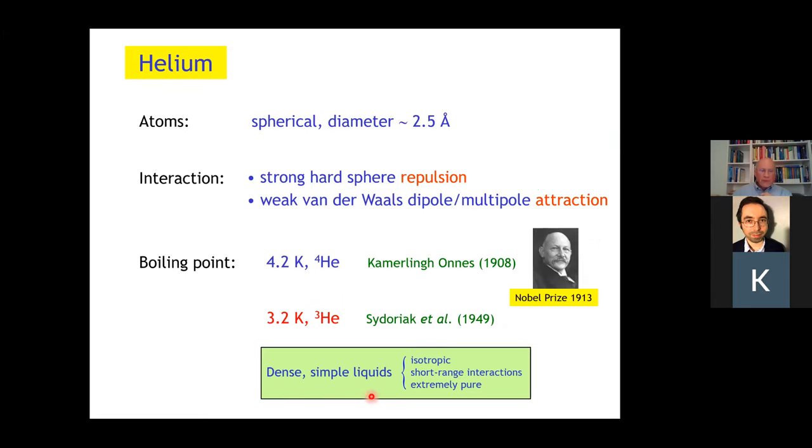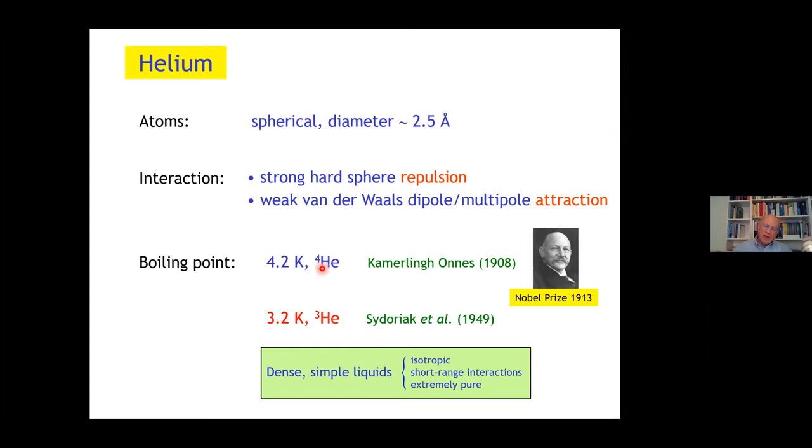Let's take a look at the helium atom. Helium is a noble gas, spherical with a diameter of about 2.5 angstrom. The interaction is strong hard sphere repulsion and there's an attraction due to weak van der Waals dipole and higher multipole forces. Because of that weak attraction, the boiling point is low, 4.2 Kelvin. This was managed by Kamerlingh Onnes, who got the Nobel Prize for that in 1913. The boiling point of helium-3 is a little lower because the mass is a little lower.